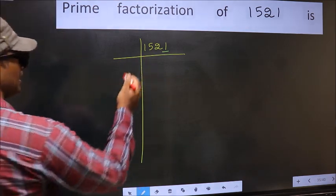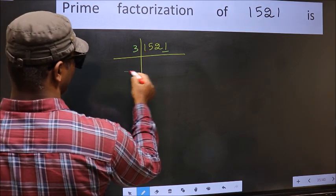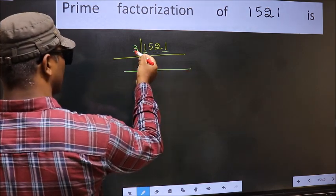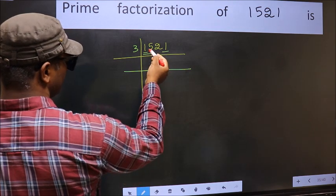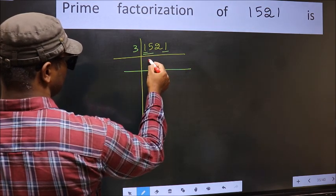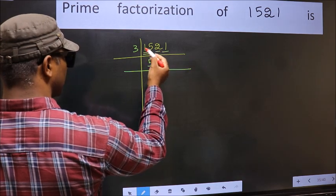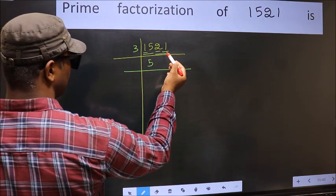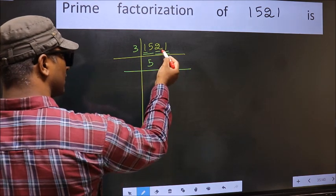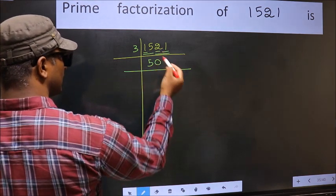So take 3 here. First number 1 is smaller than 3, so take 2 numbers: 15. When do we get 15 in the 3 table? 3 times 5 is 15. The other number 2 is smaller than 3, so take 2 numbers: 21. Remember, whenever you are taking 2 numbers, you must put 0.